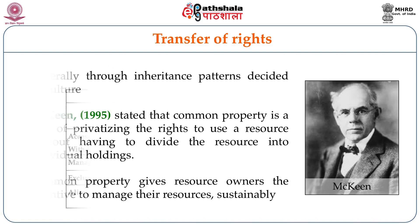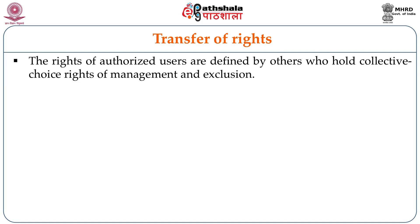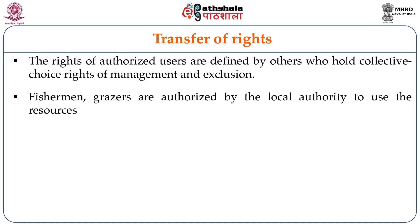Common property gives resource owners the incentive to manage their resources sustainably. Using this concept of rights, Schlager and Ostrom divided the natural resource users into four categories. The first is authorized users — people who have only access and withdrawal rights. The next are claimants, who have access and withdrawal rights and also the right of management. Proprietors are a group who have the right of exclusion in addition to the other two. An owner is the highest category, holding the right of alienation, exclusion, management, and can make decisions about access and withdrawal. The rights of authorized users are defined by others who hold collective choice rights of management and exclusion.